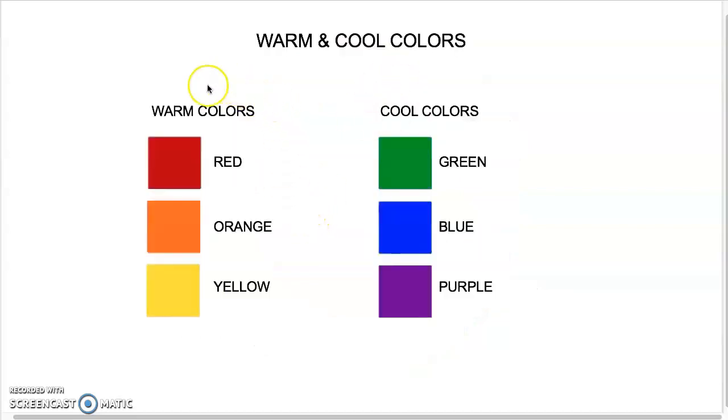In essence though, we want to say warm colors: red, yellow, orange. Cool colors: green, blue, and purple is considered a cool color because it has blue in it. That one's the one that people don't always can't easily figure out.